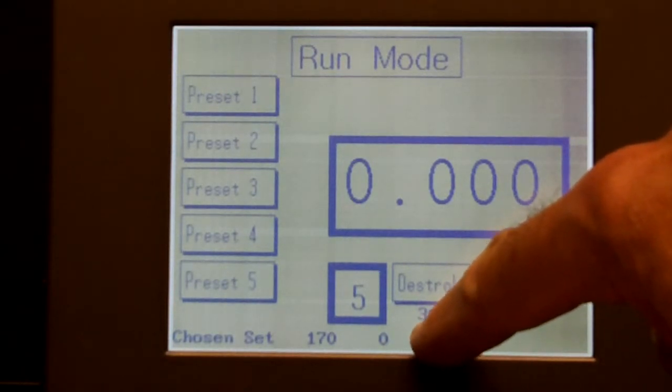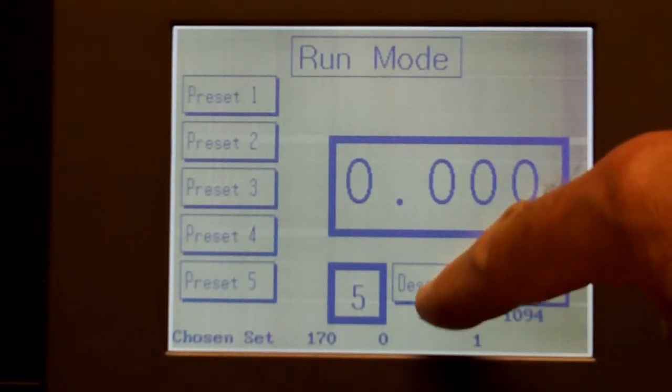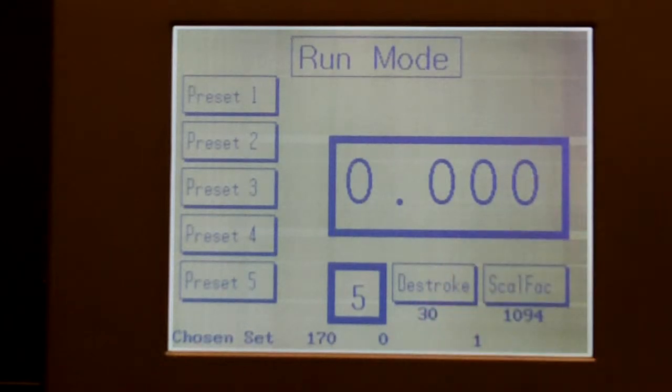The actual setting of the D-stroke value is always shown below the key, so that the operator knows what his D-stroke setting is.